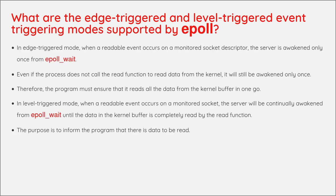What are the edge-triggered and level-triggered event triggering modes supported by EPOLL? In edge-triggered mode, when a readable event occurs on a monitored socket descriptor, the server is awakened only once from epoll_wait. Even if the process does not call the read function to read data from the kernel, it will still be awakened only once. Therefore, the program must ensure that it reads all the data from the kernel buffer in one go. In level-triggered mode, when a readable event occurs on a monitored socket, the server will be continually awakened from epoll_wait until the data in the kernel buffer is completely read by the read function, informing the program that there is data to be read.